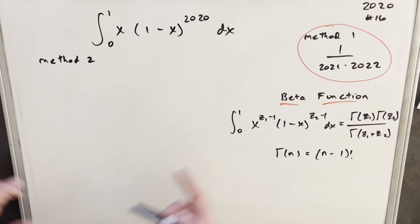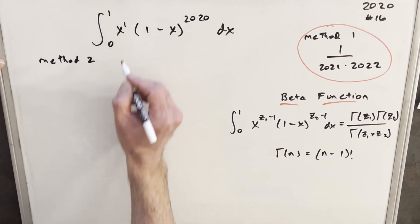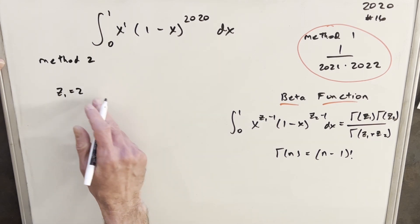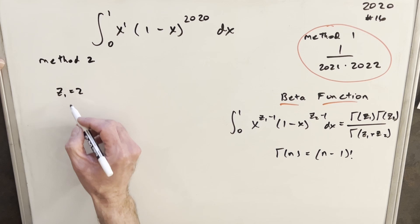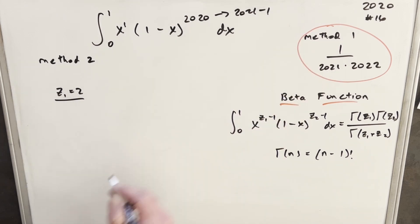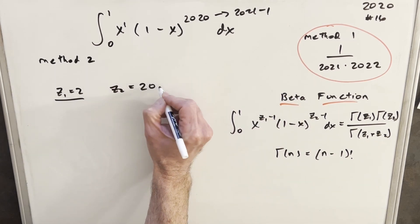So the thing we really need, though, is we need the z1 and z2 value right here. And that's just from the exponent. So what I can do is, our exponent here is a 1. Well, if I write my z1 as equal to 2, 2 minus 1 gets us the 1. So this is going to be the first value we need. And for 2020, this value can be written as 2021 minus 1. So that's going to make our z2 value equal to 2021.